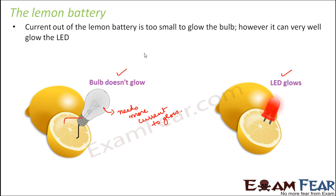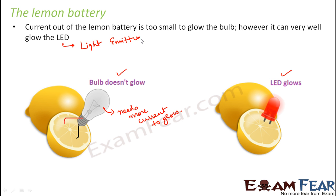The current from the lemon battery is too small to glow a regular bulb. However, it can very well glow an LED — that is, a light emitting diode. If you want, you can perform this experiment yourself and see the beauty of the lemon battery.